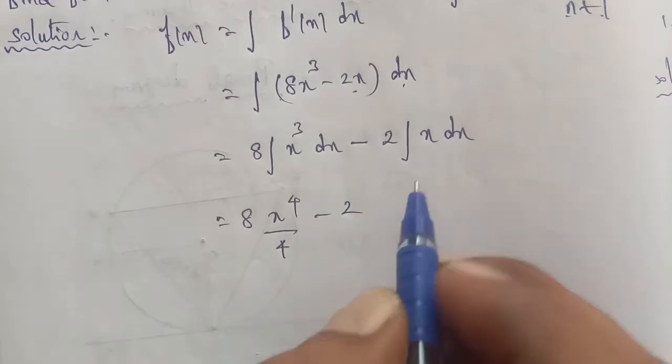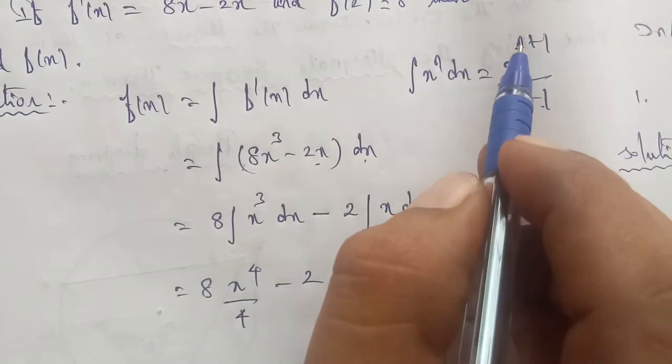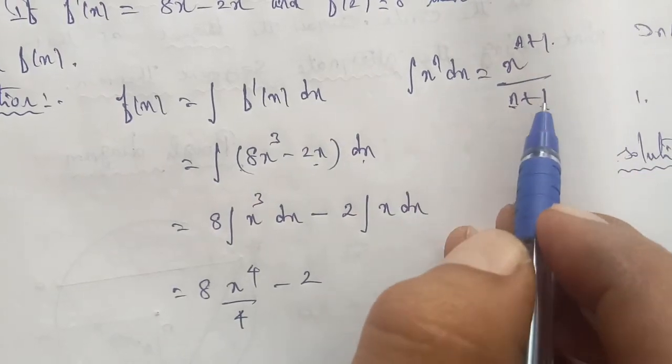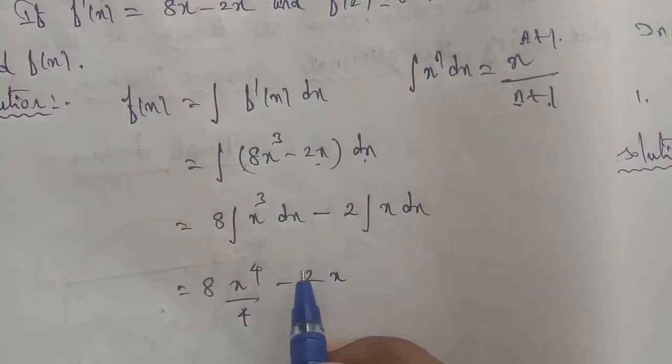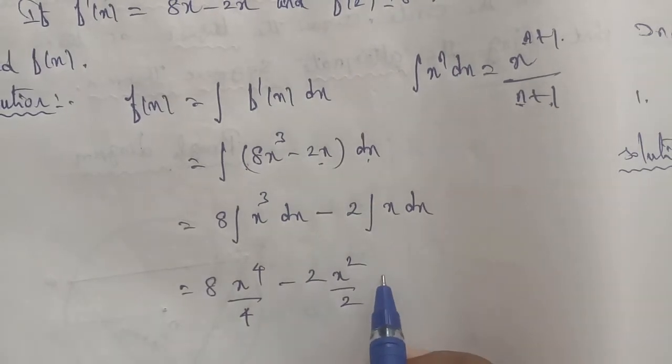Next, minus 2 times the formula applied: x^(1+1) divided by (1+1), which gives 2 times x² divided by 2. After integration, we add the constant k.